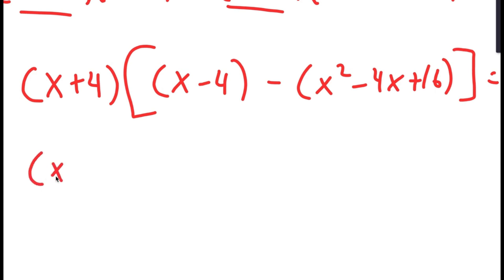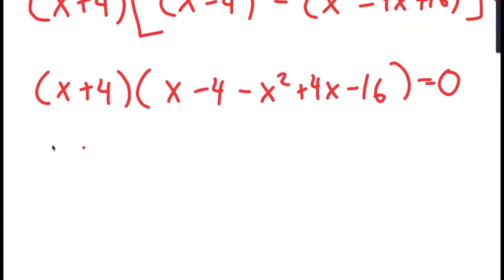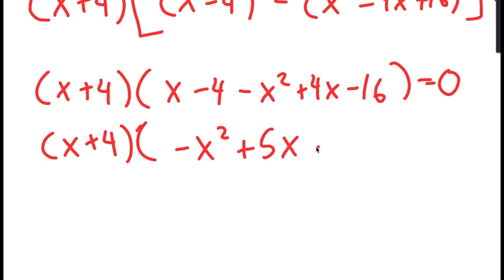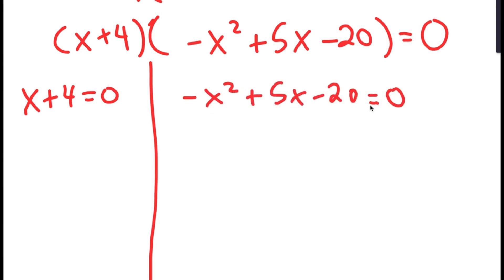Because both terms have x plus 4, I can factor out x plus 4. So I get x plus 4 times x minus 4 minus x squared plus 4x minus 16, distributing the negative sign, equals 0. Simplifying, I get x plus 4 times negative x squared plus 5x minus 20 equals 0. This gives two equations: x plus 4 equals 0, and negative x squared plus 5x minus 20 equals 0. For x plus 4 equals 0, subtracting 4 gives x equals negative 4.